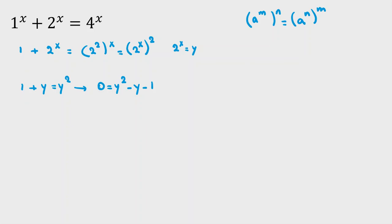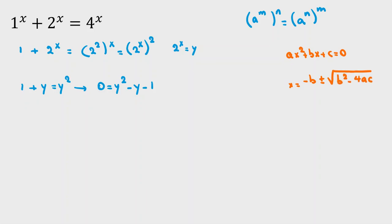For solving this, we should know the quadratic formula. If we have ax squared plus bx plus c equal to 0, then x equals negative b plus or minus square root of b squared minus 4ac, all over 2a. So here, a is 1, b is negative 1, and c is negative 1.